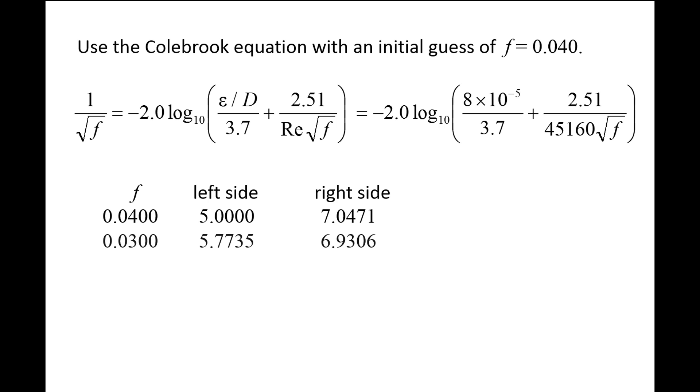So we reduce f to 0.03 and recalculate both sides of the equation. The left side is now 5.7735 and the right side is 6.9306. We need to decrease the value of f further. Reducing f to 0.025 results in the left side value of 6.3246 and a right side value of 6.8563. Although there is no established criterion of when this iterative process should stop, if you repeat this process until the first three significant digits of both sides of the Colebrook equation are the same, you will have obtained a sufficiently accurate result for f.